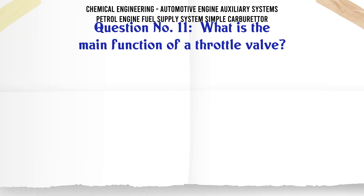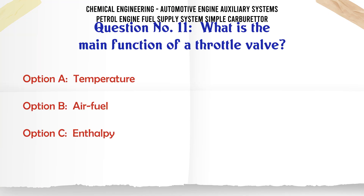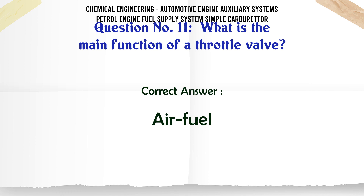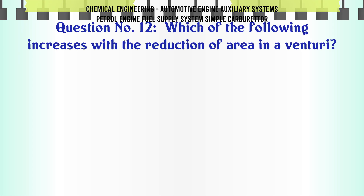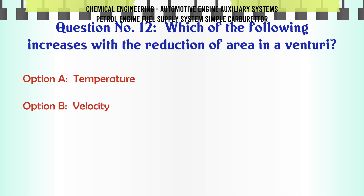What is the main function of a throttle valve? A. Temperature. B. Air fuel. C. Enthalpy. D. Entropy. The correct answer is air fuel.